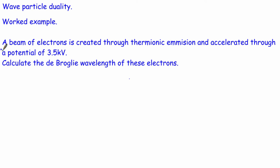So we're going to finish off by looking at a quick worked example. We have a beam of electrons that's created through thermionic emission, and then we accelerate them through 3.5 kilovolts. And we want to know what the de Broglie wavelength is. So we'll just start off with our equation that we've just derived, like that. And we'll simply just put our numbers in.